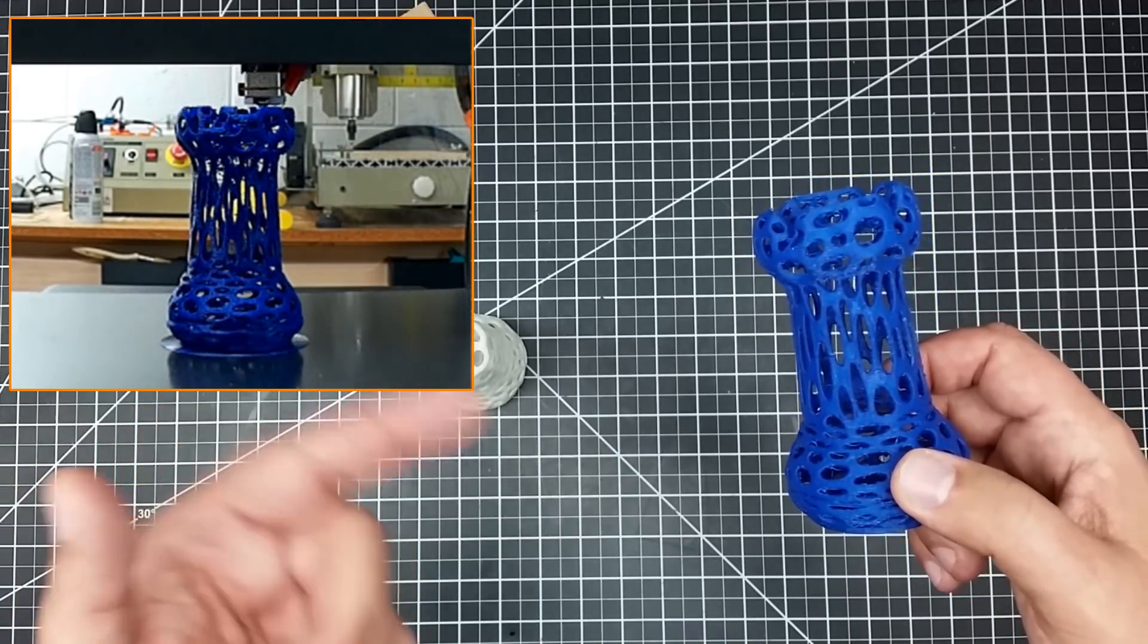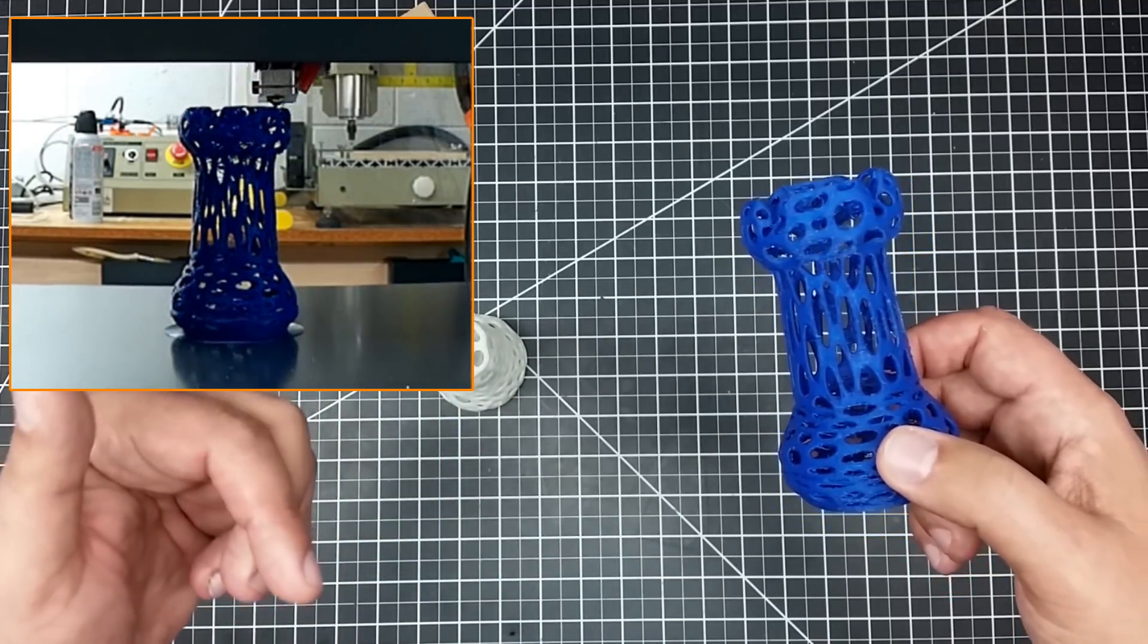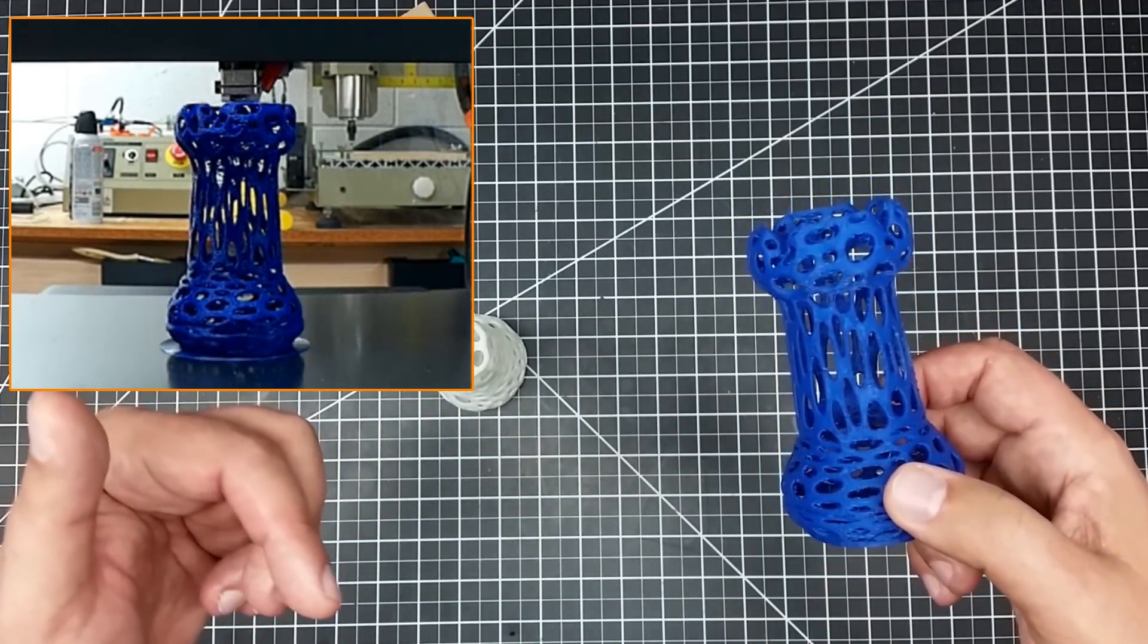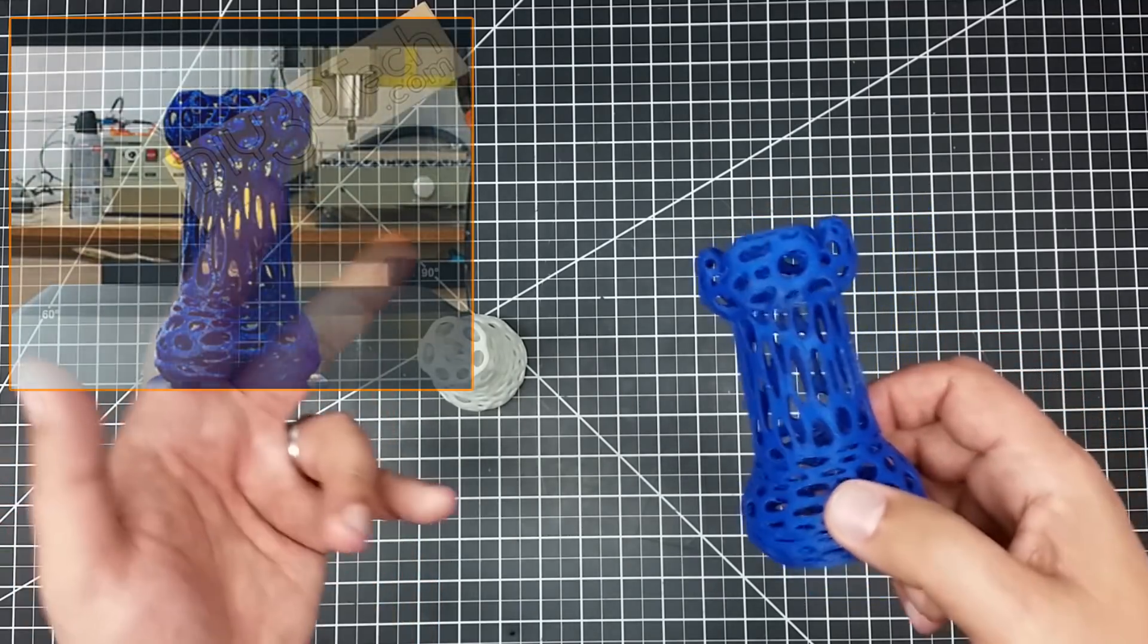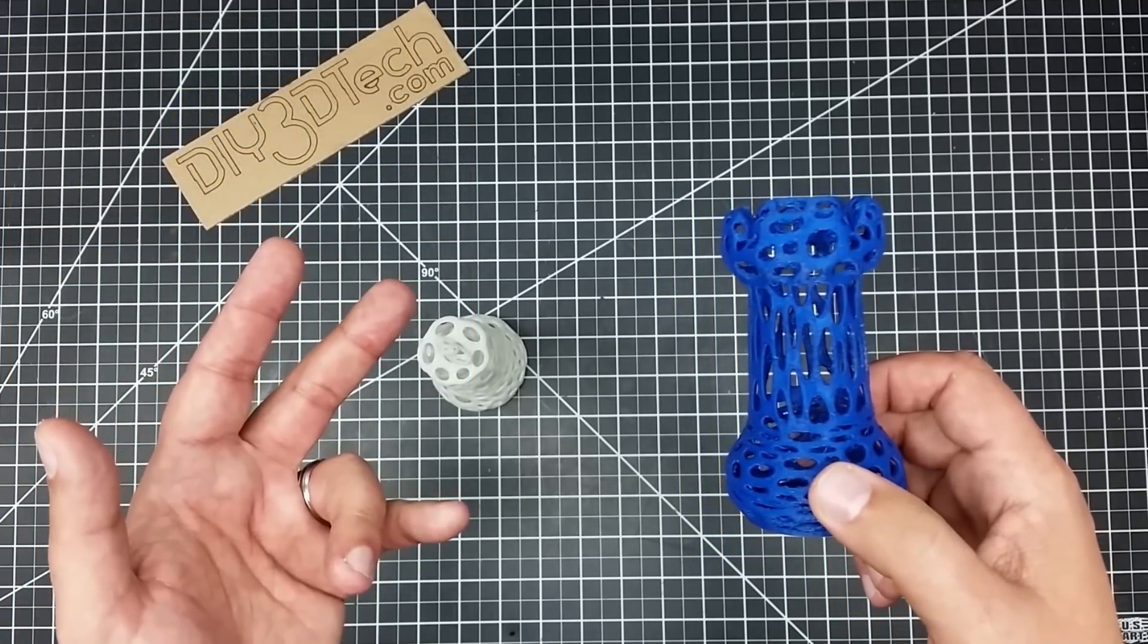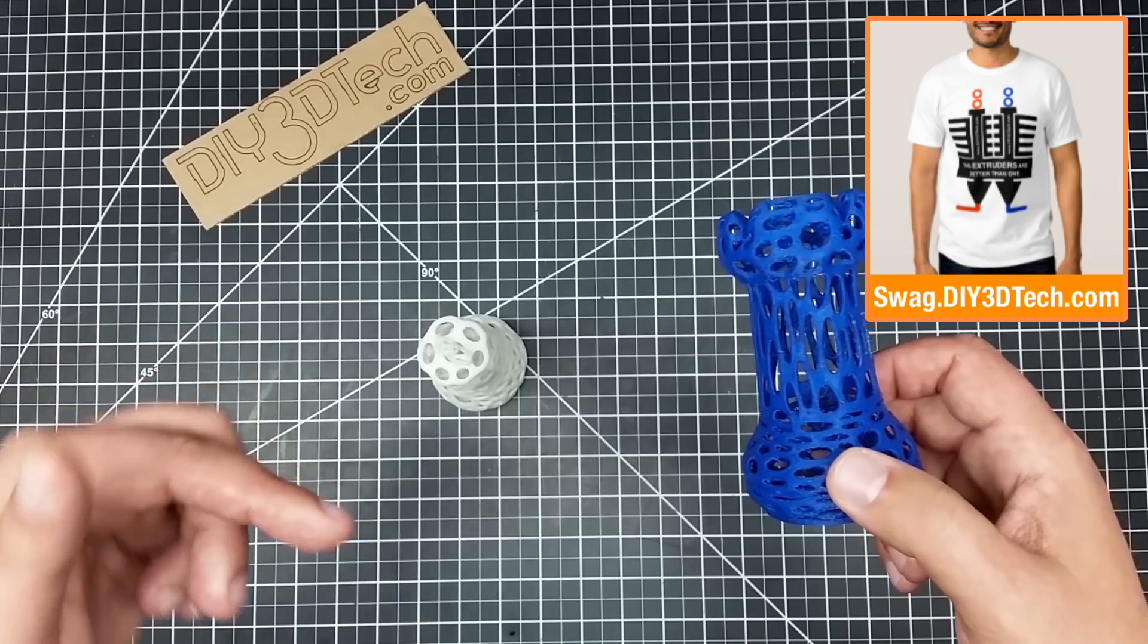So anyways, hopefully you found this interesting. If you did, give it a big thumbs up. Let me know what your settings are in general for PETG, especially retraction. I'm interested to hear what are you running for retraction. And what are you running for temperature settings, especially if you have hatchbox filament. Be interested in the comments below.